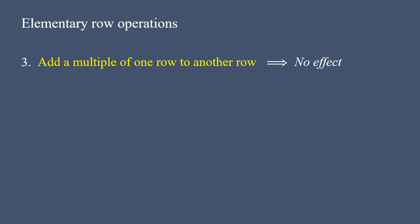The third statement says that after adding a multiple of one row to another row, the value of determinant does not change. Let's consider the same matrix again. Now, for demonstration purposes, we multiply the second row by negative 2 and add to the first row.